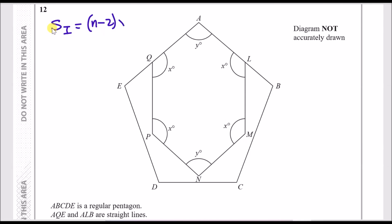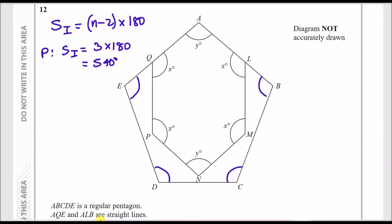For a pentagon, the sum of interior angles is (5 minus 2) times 180, which is 3 times 180, giving us 540 degrees. All angles in this regular pentagon must equal 540. Because it's regular, every angle is the same — so all of them are y. To get y, divide 540 by 5, which gives us 108 degrees. Therefore y is 108.